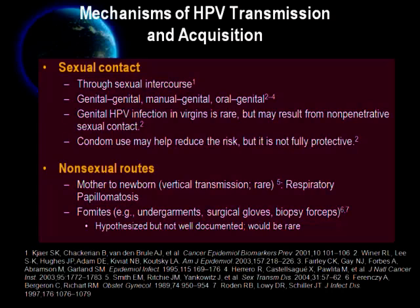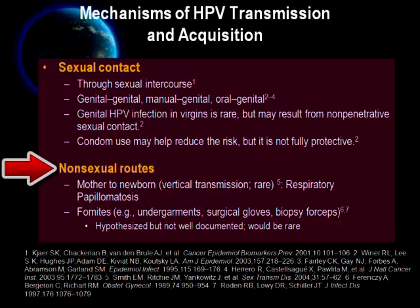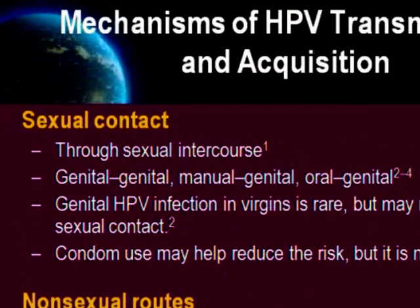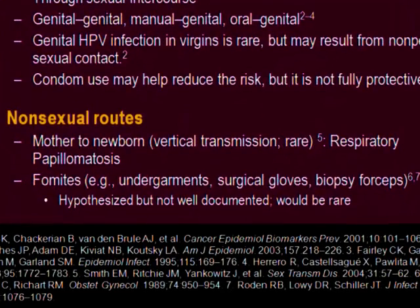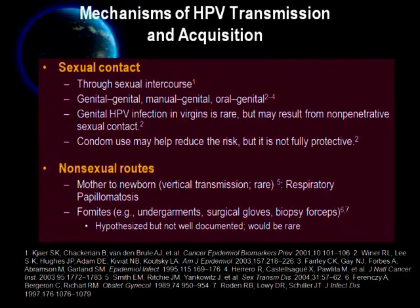What are the mechanisms of HPV transmission? There are two main mechanisms. Number one is sexual contact, and number two is non-sexual contact. HPV infection is acquired mainly through sexual contact — either genital-genital, manual-genital, or oral-genital. It may also be transmitted to virgins through non-penetrative sexual contact. HPV can also be transmitted through vertical transmission from mother to baby, causing respiratory papillomatosis. Some believe HPV could also be acquired through contact with fomites such as undergarments, surgical gloves, and biopsy instruments, but this is extremely rare.